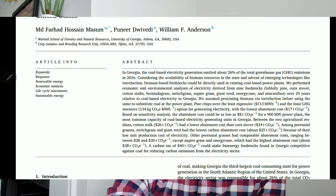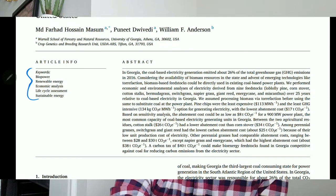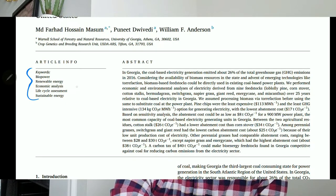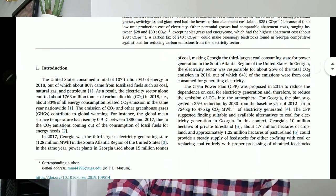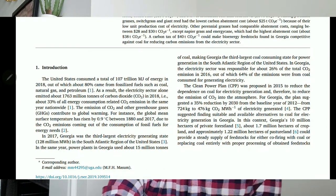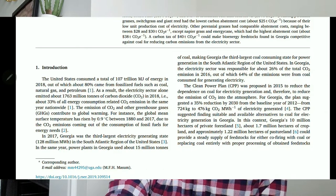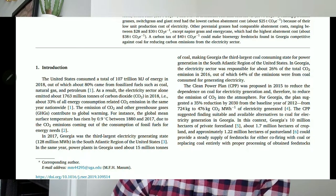After the abstract, we have keywords describing what the paper is really about. My paper's keywords included biopower (electricity from biomass), renewable energy, economic analysis, and life cycle assessment. Then we go to the introduction section, where we discuss why this particular research is important and provide the background.